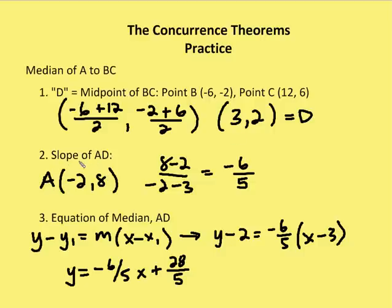We find the slope of the median AD: change in y values is 8 - 2 = 6, over -2 - 3 = -5, giving us -6/5. So -6/5 is the slope of the median. Using point-slope form with point D: y - 2 = -6/5(x - 3). Solving for y gives us y = -6/5x + 28/5.